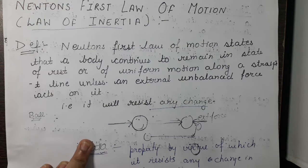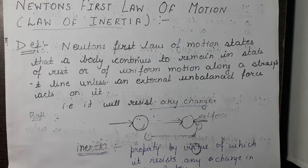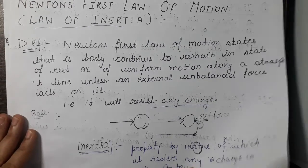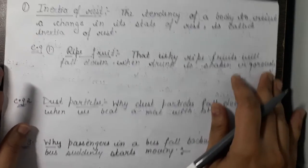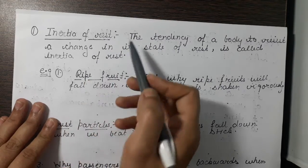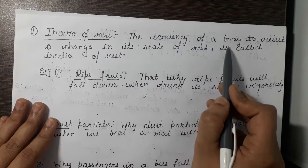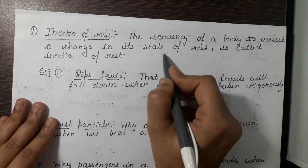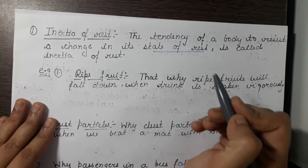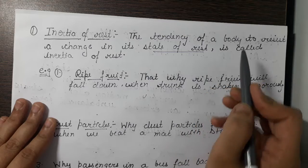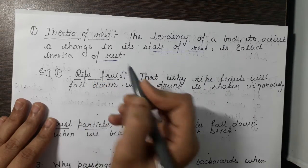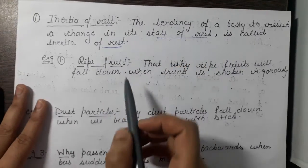Inertia may be of three types. The first type is inertia of rest. From the name it is very clear — it is the tendency of a body to resist a change in its state of rest. That is, if the body is in the state of rest it will try to remain in the same state. This tendency is called inertia of rest.